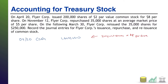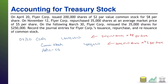We cannot attribute all of that to the common stock itself because the common stock only has a $2 par value. So we are going to credit common stock for only 200,000 shares times $2 per share — that's $400,000, the par value. And then we credit additional paid-in capital — common stock — for the other $1.2 million.